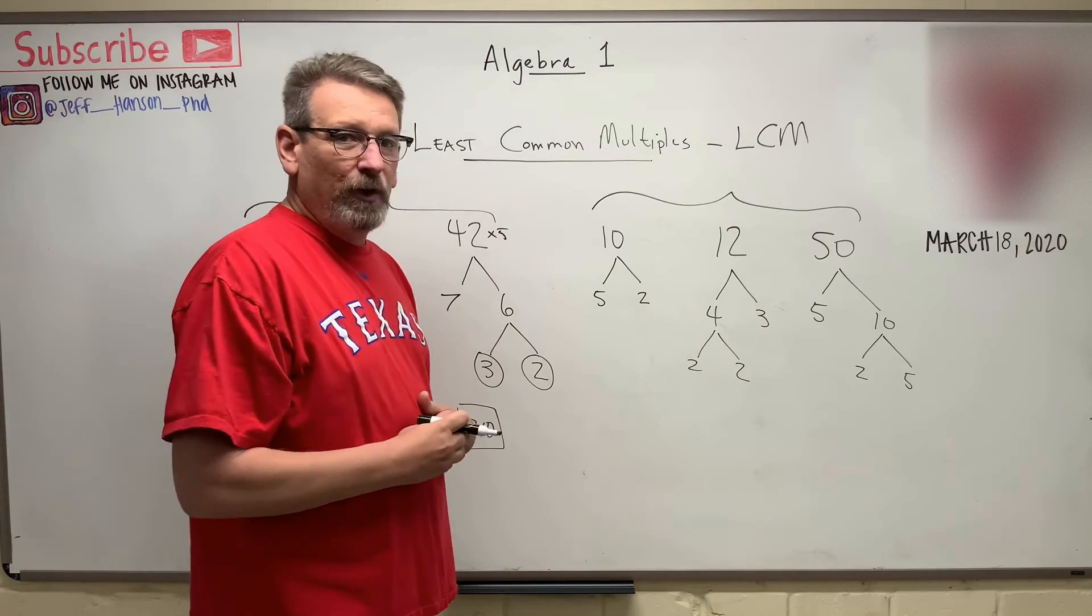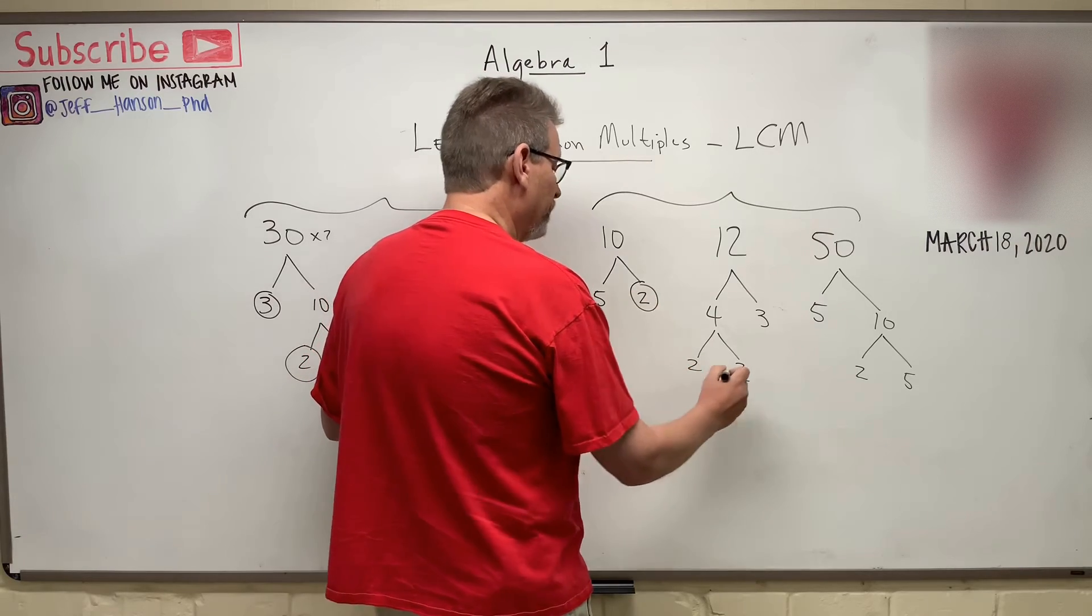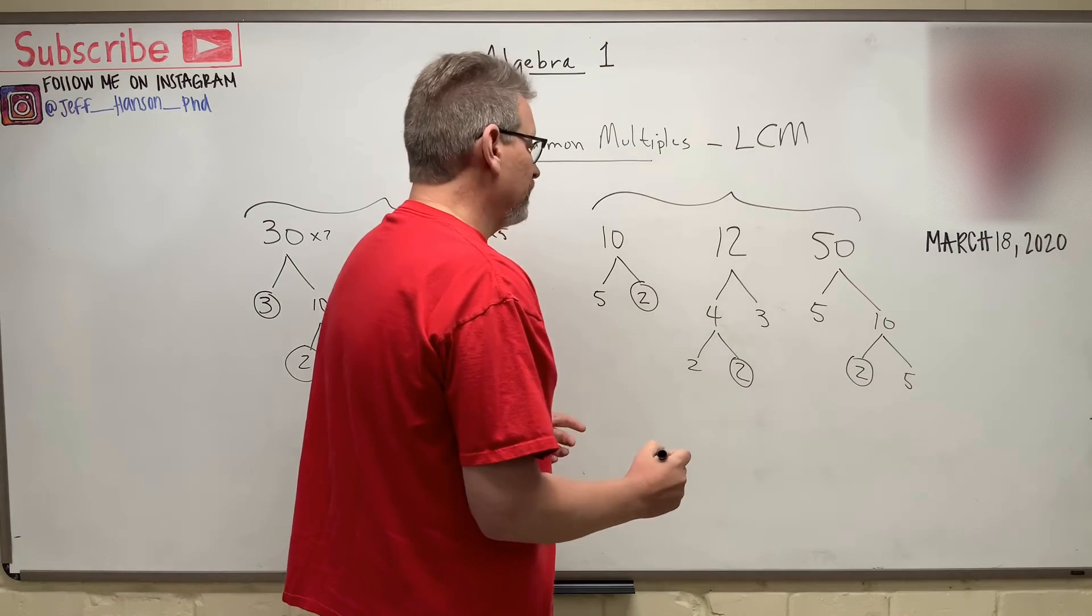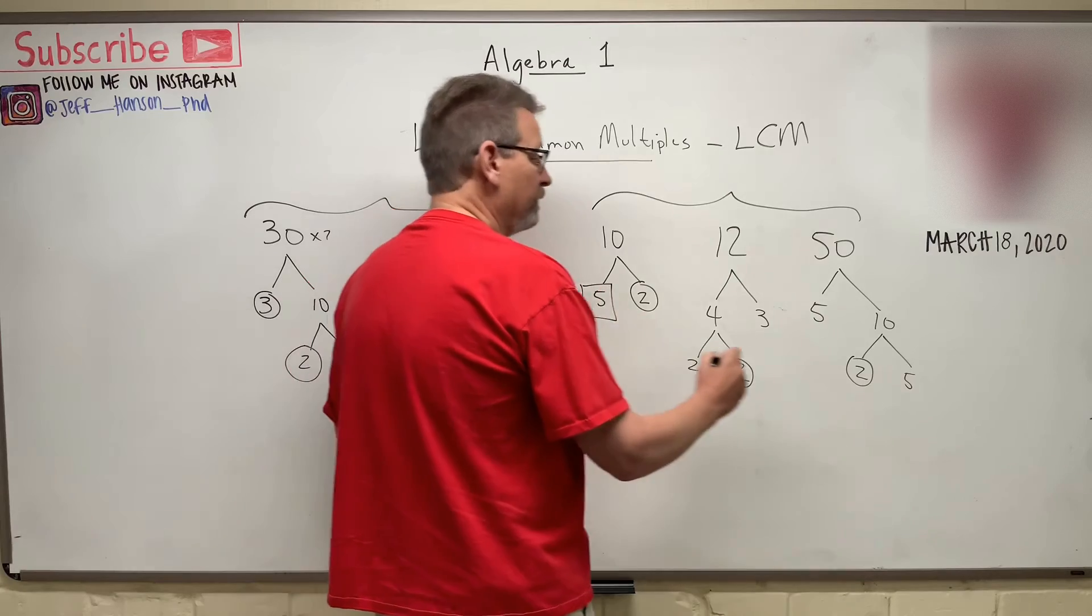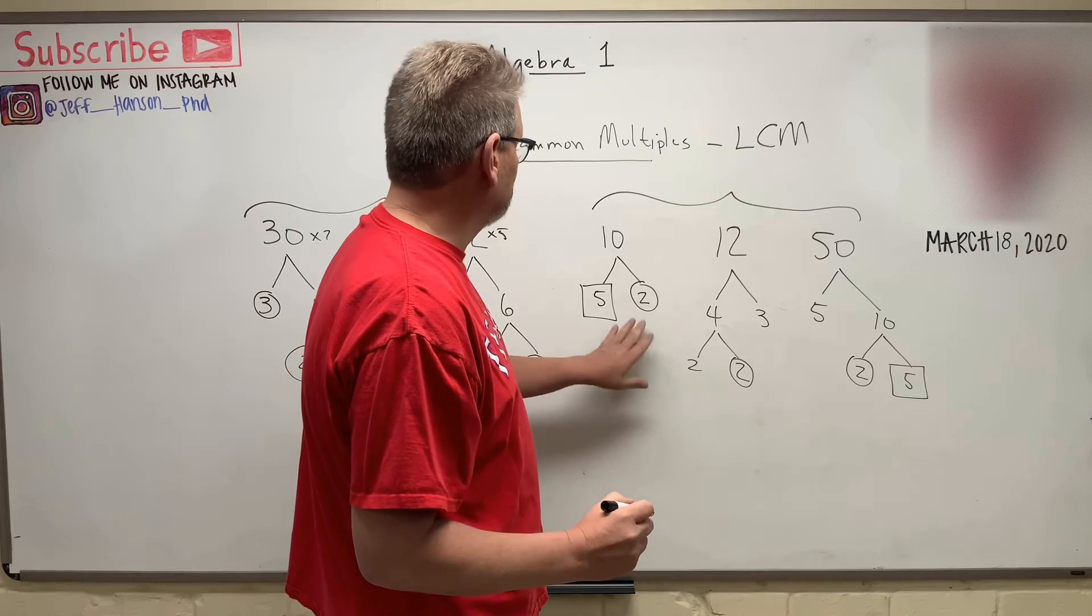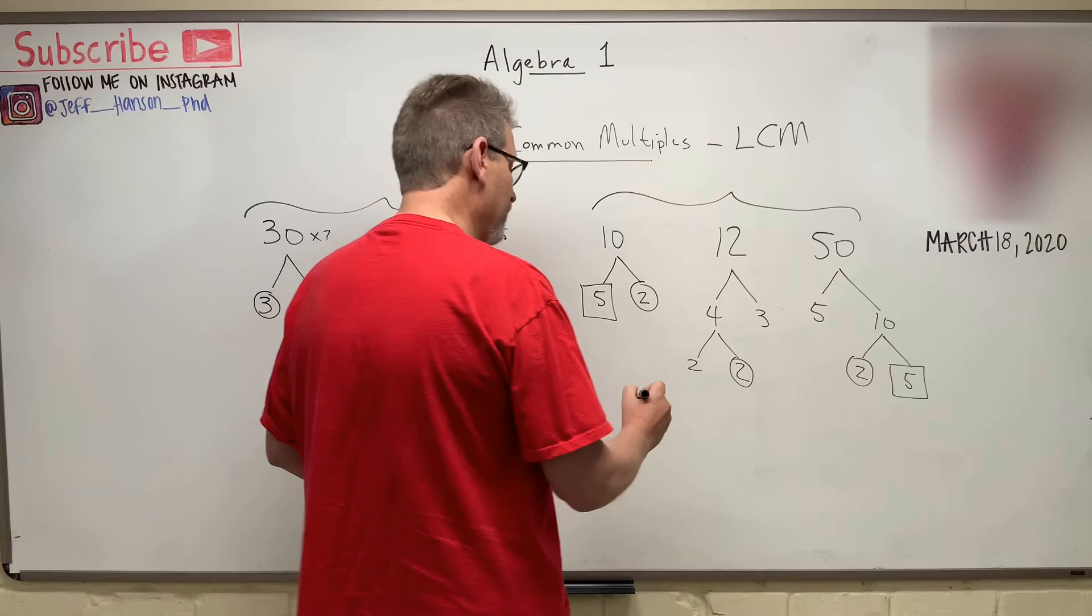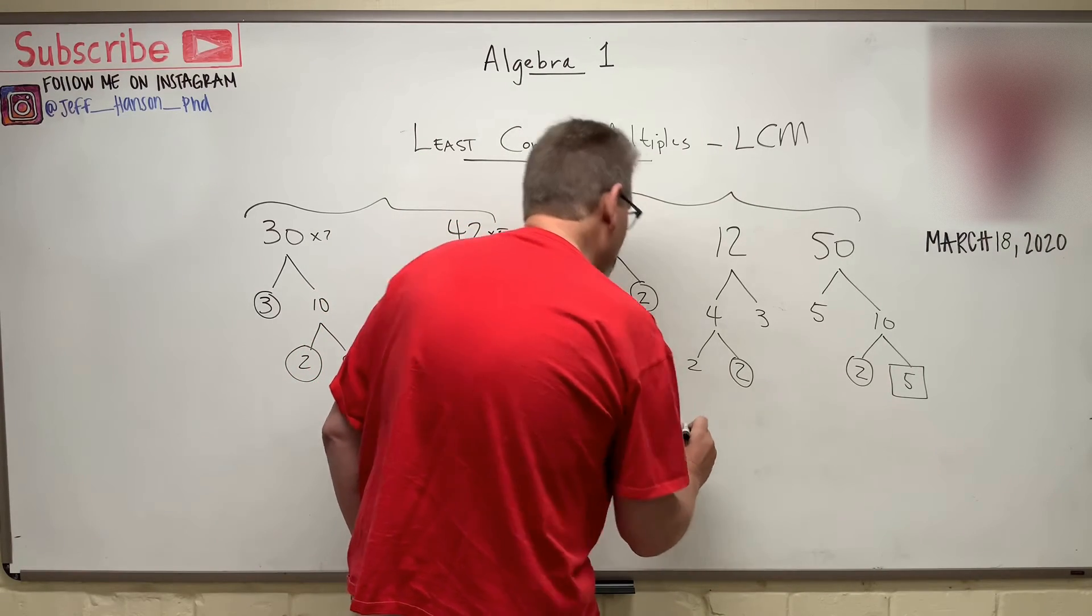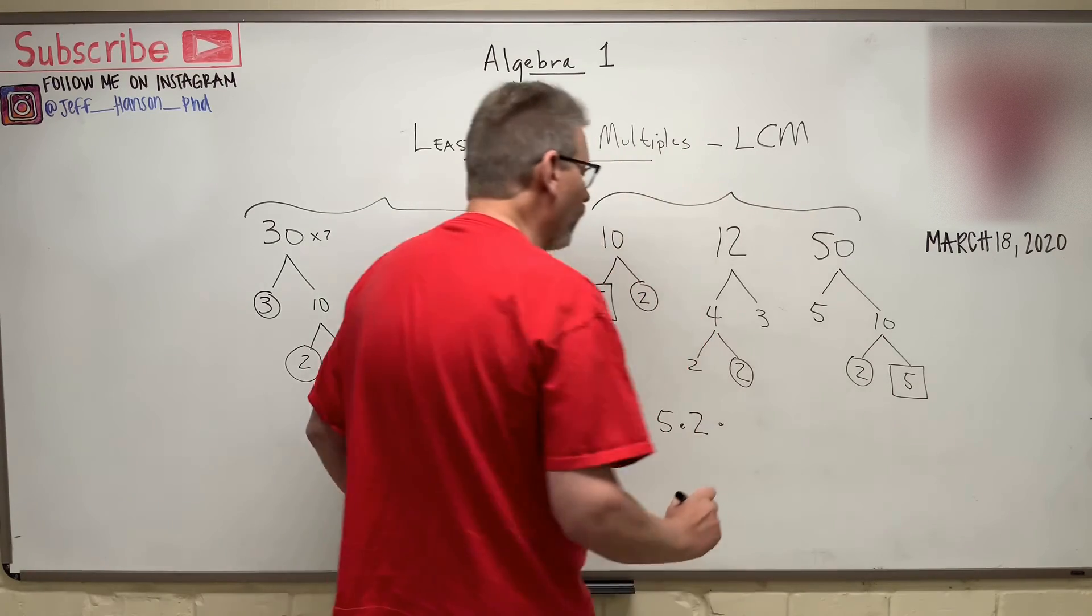Now, again, we're just going to go through and look at those things that are common and match them up. So you've got a 2, you've got a 2, and you've got a 2. There's 1. But we'll draw a different shape around the next one. Is anybody common? Oh, here's a 5. We'll do squares. There's a 5. And then anybody else common? No. A 2, a 3, and another 5. So here we go. So the least common multiples are, let's do the squares. That's 5 times the circles. That's a 2 times now all the leftover guys. Times 2 times 3 times 5.